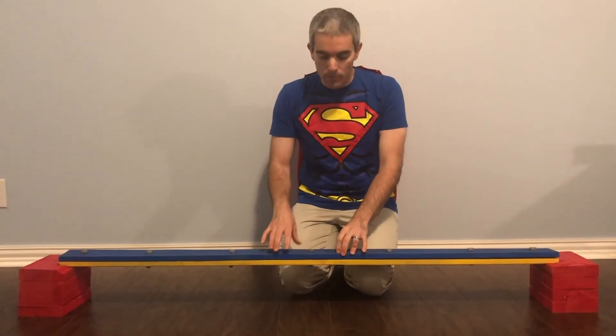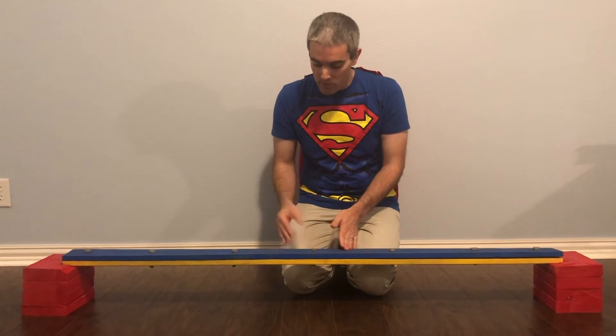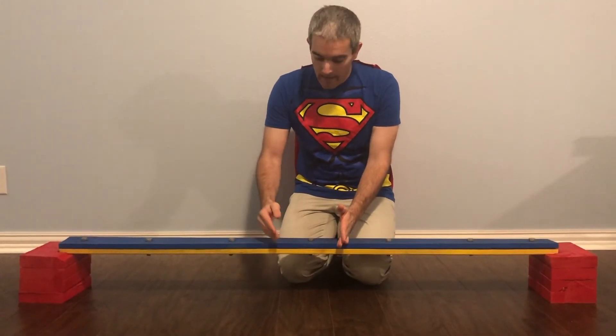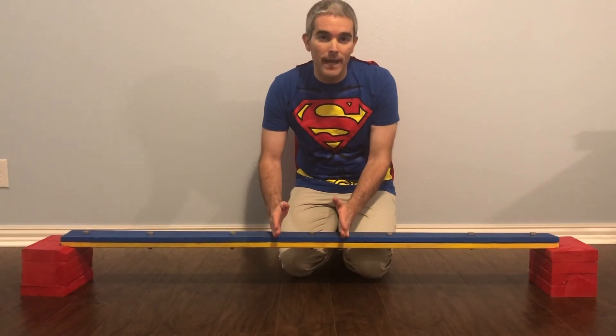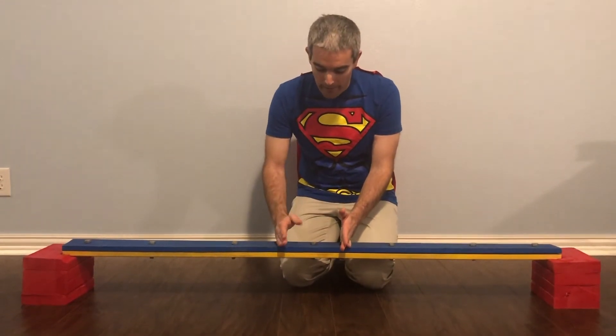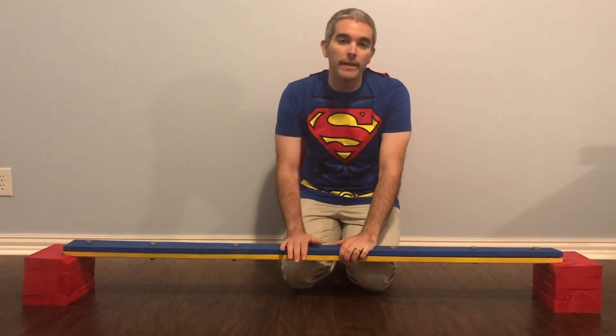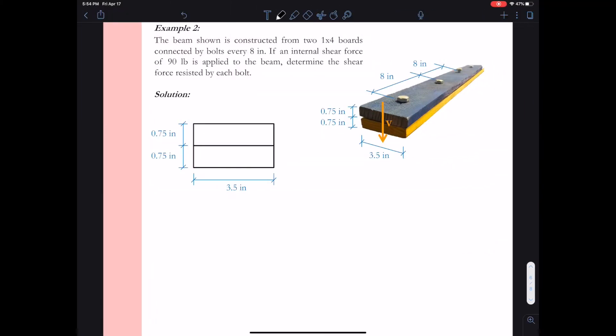That little q is going to be like so many pounds per inch. Say I have a total of eight inches here. Pounds per inch times that tributary width is going to give me how much force is acting on this bolt line.